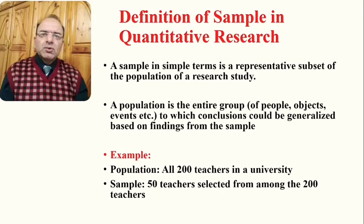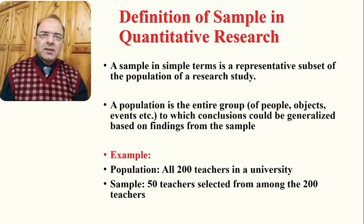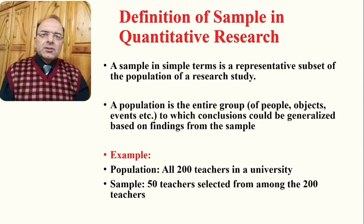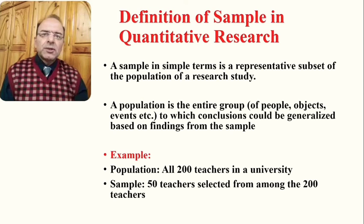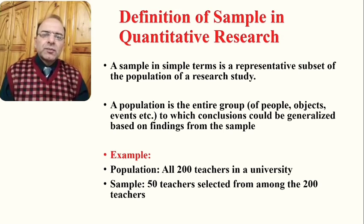In most quantitative survey researches, the aim is actually generalization of the findings and conclusions. Because including the whole population in the survey is generally difficult, the concept of sampling exists — which is actually representative of the population — in order to generalize findings based on results from the sample.